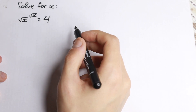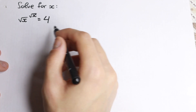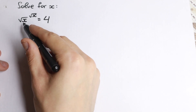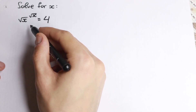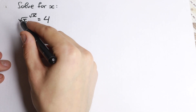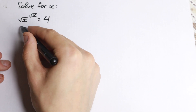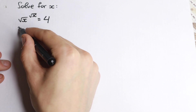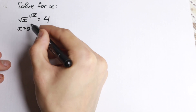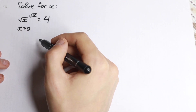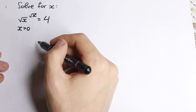First of all, I want to mention one really interesting point. We have a square root, and we all know that everything inside a square root must be positive. So the first condition is x is greater than zero.